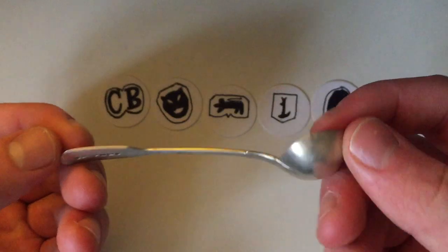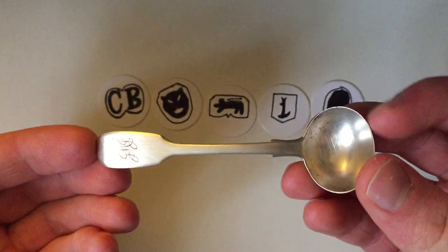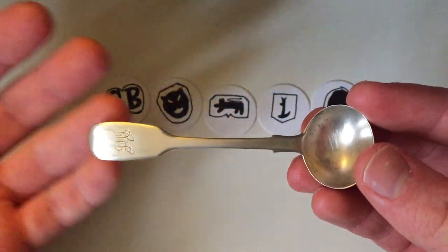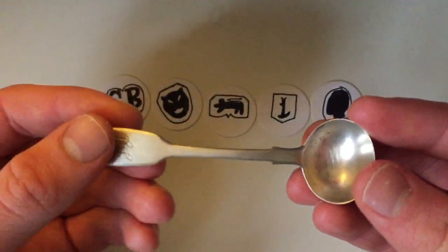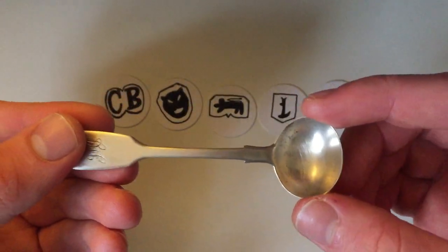As you can see, the spoon's in good condition. It's about 10 centimeters long, for those of you who would like to know that. About 1.5 centimeters wide at this end and then the bowl's about 3 centimeters across.